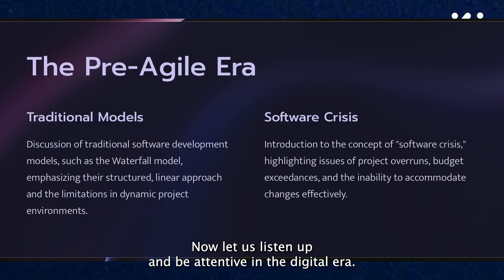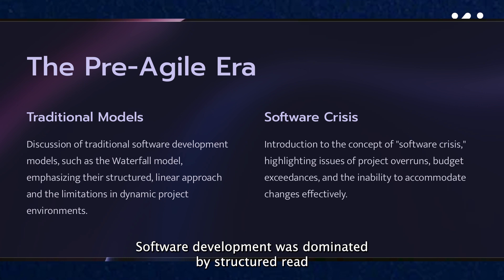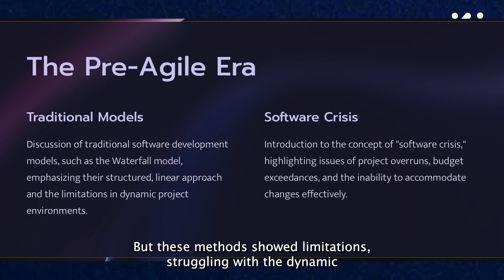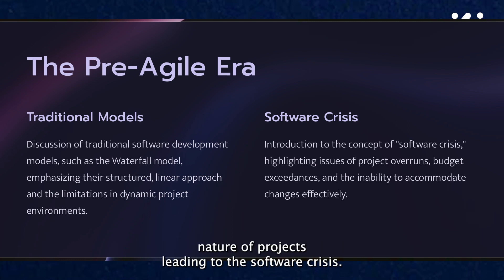In the pre-agile era, software development was dominated by structured, linear approaches like the waterfall model. But these methods showed limitations, struggling with the dynamic nature of projects, leading to the software crisis.